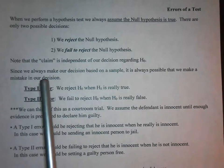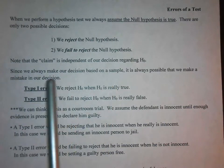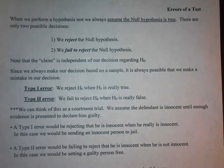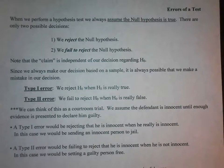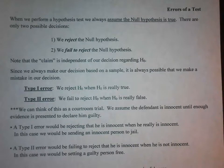Since we're going to make our decision based on a sample, it's always possible that we make a mistake in our decision. When somebody makes a claim about a population mean, we're going to collect a sample and see if our sample matches up with what our null hypothesis says. But because we're basing our decision on a sample, it's possible that we make a mistake.